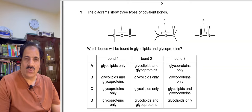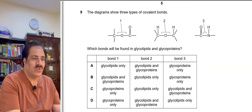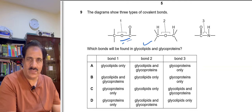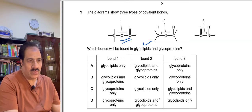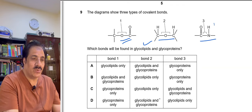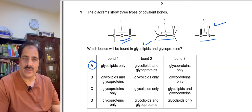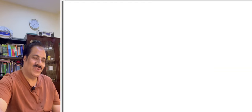Question 9 shows three types of covalent bonds: an ester bond (C-O-O), a glycosidic bond (oxygen bridge between carbons), and a peptide/amide bond (C=O-NH). Which bonds are found in glycolipids? Glycolipids contain ester bonds (lipids are esters) and glycosidic bonds (oxygen bridge). They do not contain the amide/peptide bond, which is found in proteins and glycoproteins. So option A — ester bond and glycosidic bond — is the correct answer.